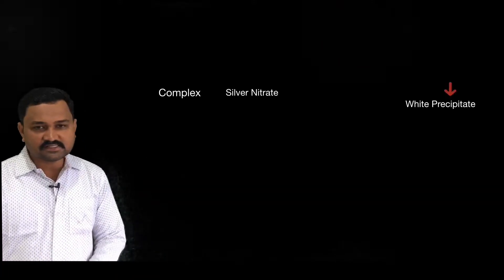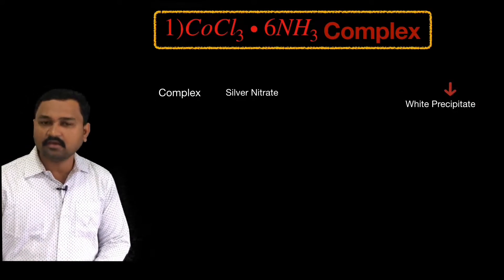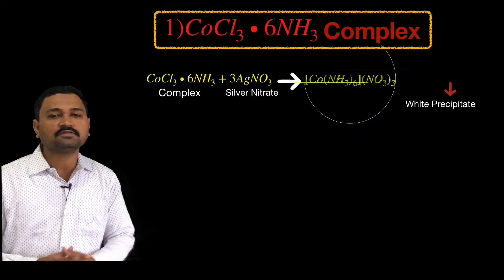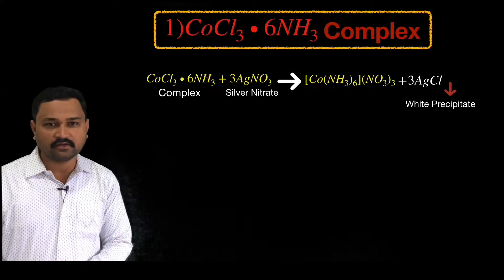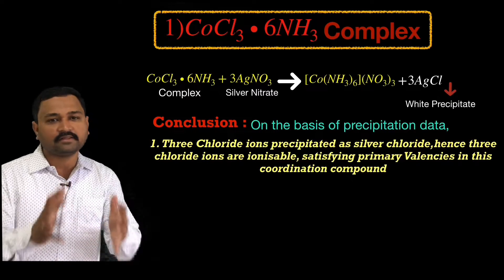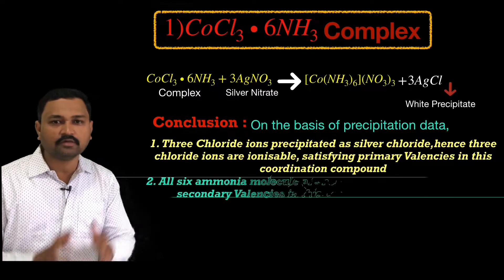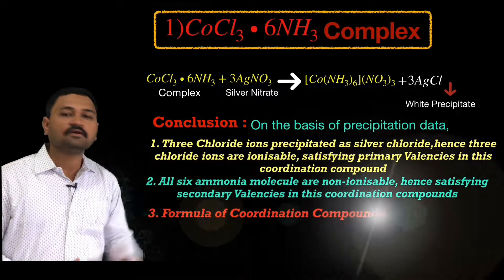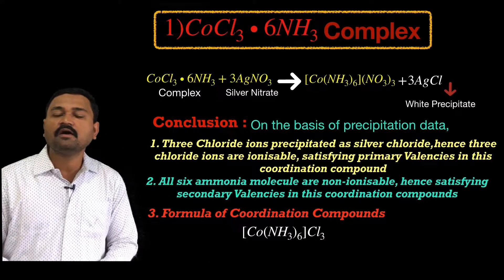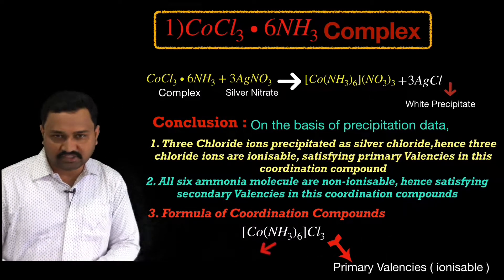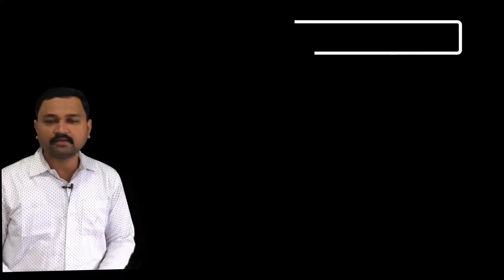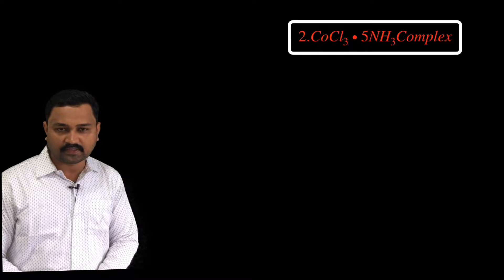We are going to consider four different cobalt amine chloride complexes to find out how Werner determined the formula for each complex compound on the basis of primary and secondary valency. Let us consider the first complex: [Co(NH₃)₆]Cl₃ — written as CoCl₃·6NH₃. When this complex is treated with silver nitrate solution, it gives three moles of silver chloride as a white precipitate. Werner concluded that three valencies are satisfied by primary valencies (three Cl⁻ outside), while the six ammonia molecules satisfy the six secondary valencies. Hence he formulated this complex as [Co(NH₃)₆]³⁺ with 3Cl⁻ outside the coordination sphere.